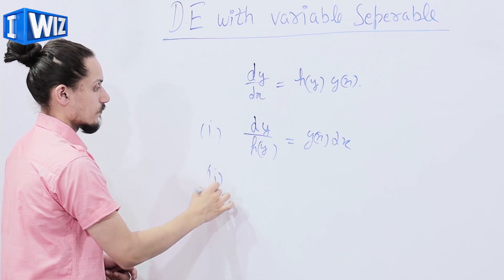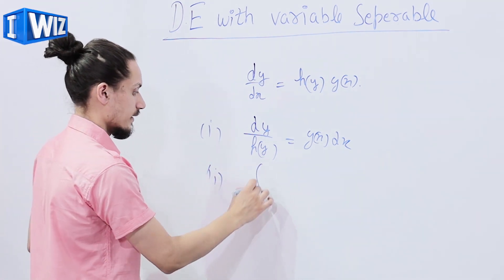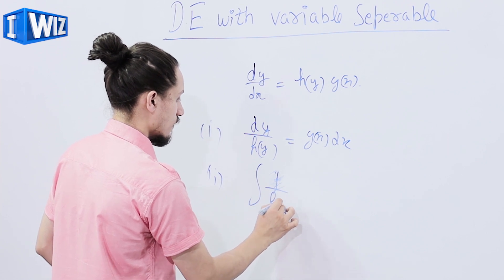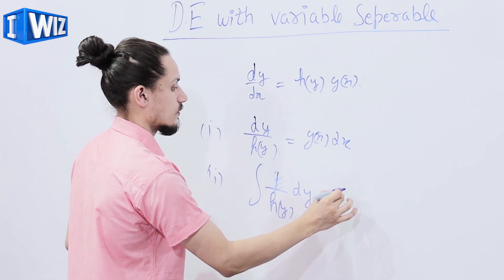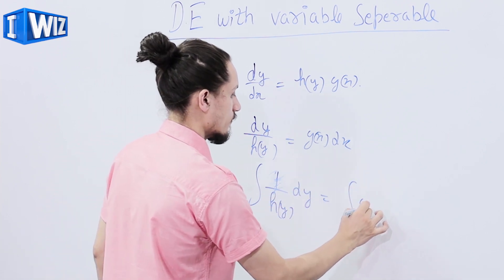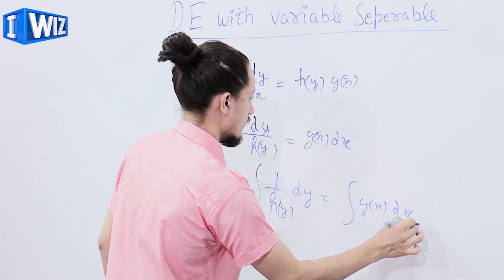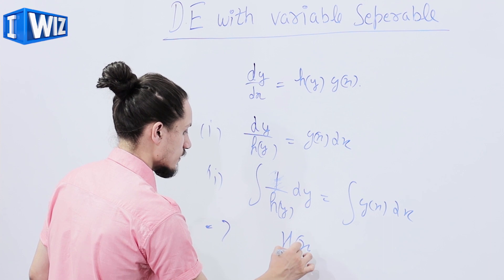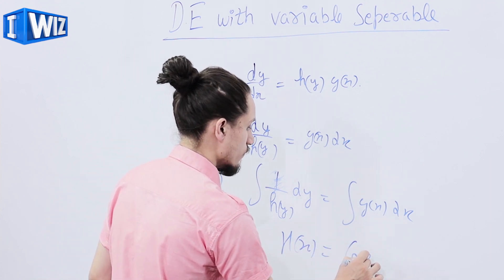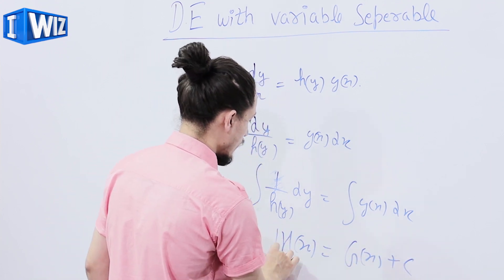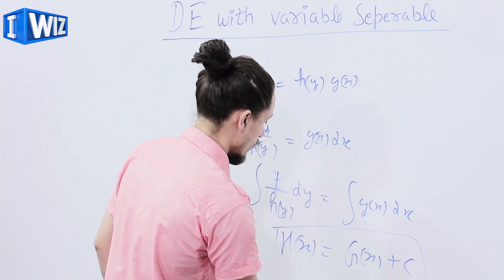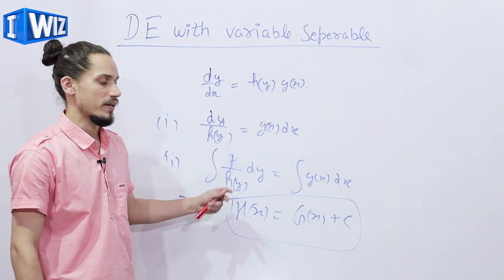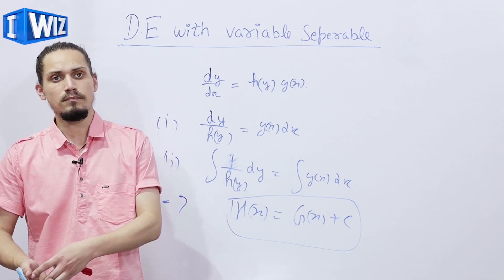The second step: we integrate both sides. So integrating 1/h(y) with respect to dy is equal to the integral of g(x)dx, which will give us h(x) equal to g(x) plus c. This is how you find the solution of a differential equation with the method of variable separable. Now let's look at some examples.